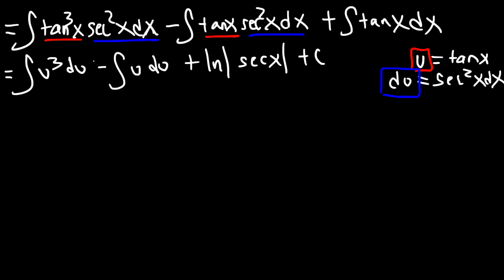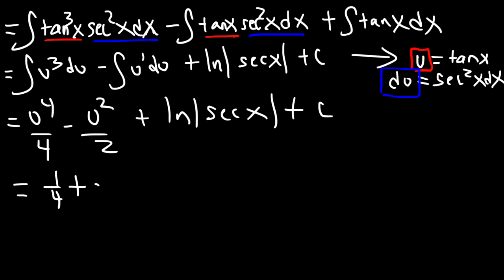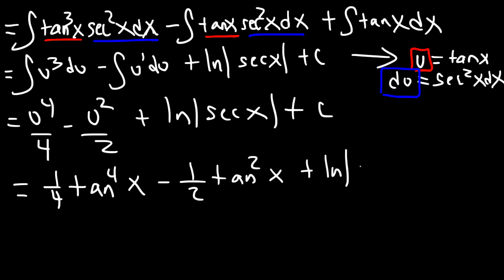Now let's get back to what we have. The integral of u cubed is u to the fourth over 4, and the integral of u is u squared over 2. We already have ln|secant x| plus c. Replacing u with tangent, the final answer is: one-fourth tangent to the fourth power minus one-half tangent squared plus the natural log of secant x, plus c.